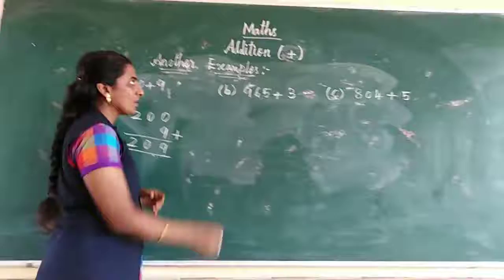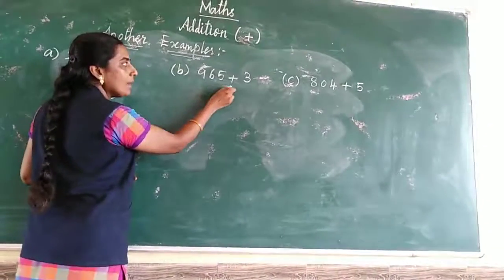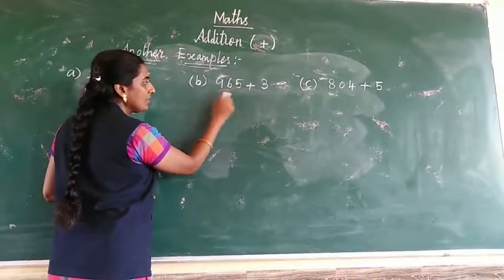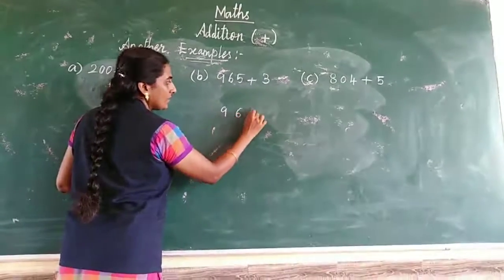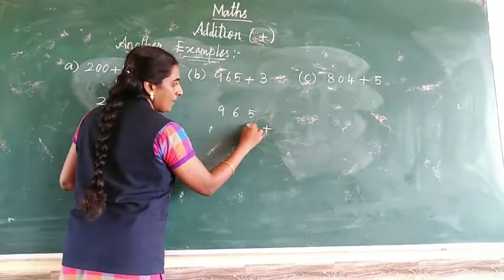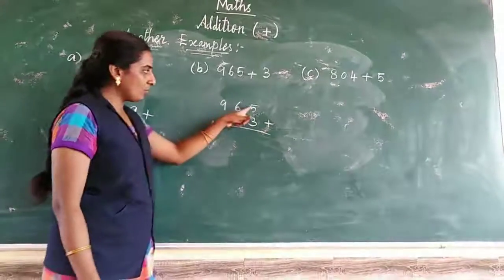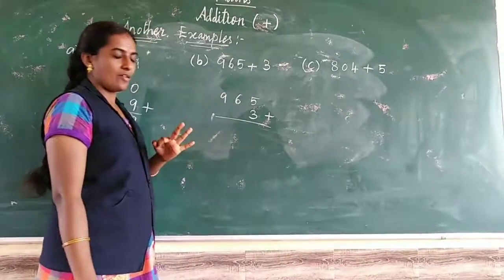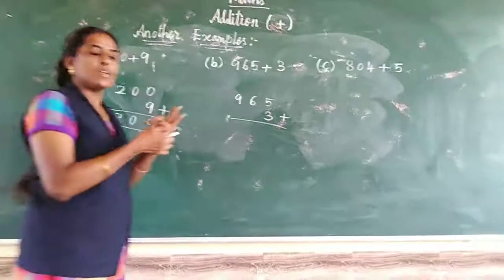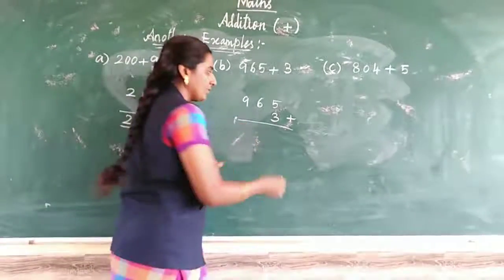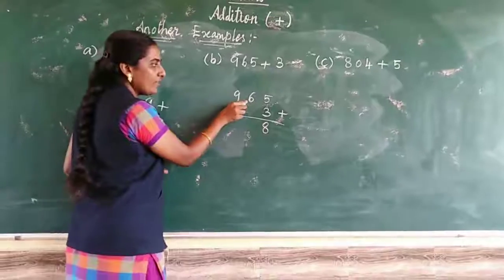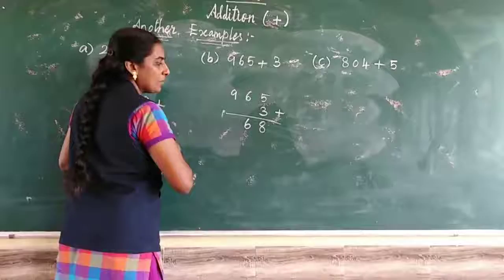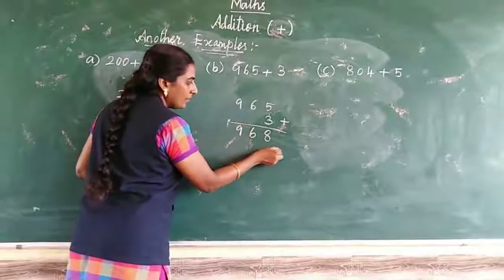Now problem B: 965 plus 3. First we look at the ones place. What are the numbers? 5 and 3. Put 5 in your mind, 3 on your fingers. After 5: 6, 7, 8. Write it down. Next the tens place - below we don't have any number, so directly write 6. The hundreds place is also like this, so write down 9.